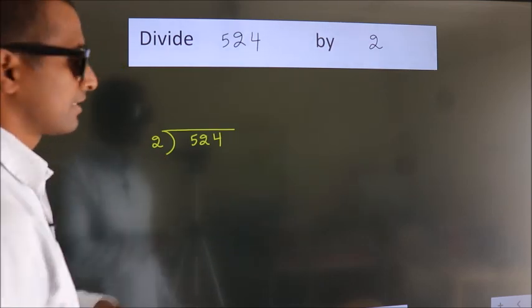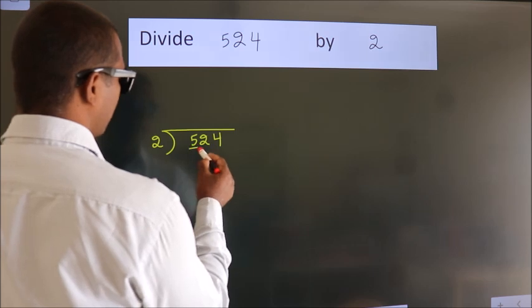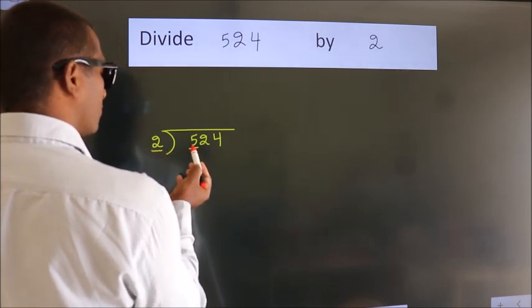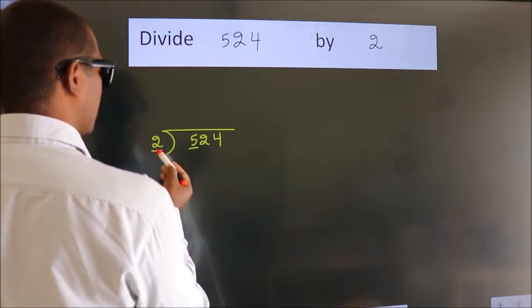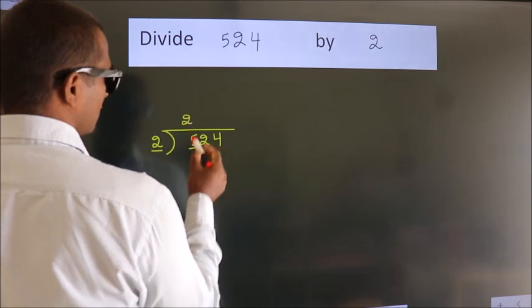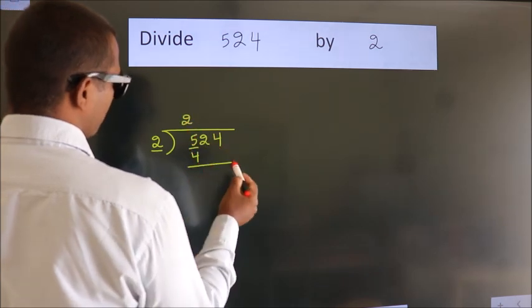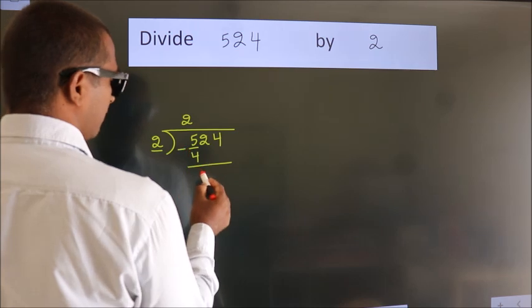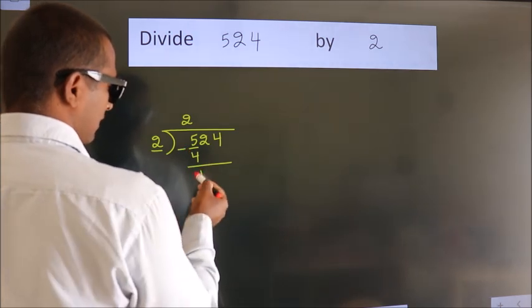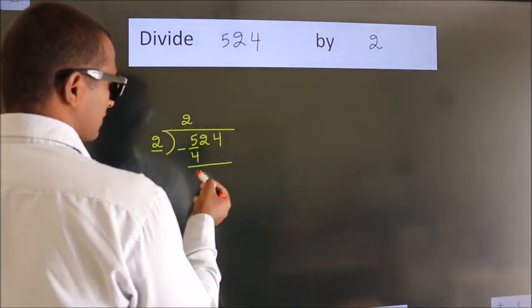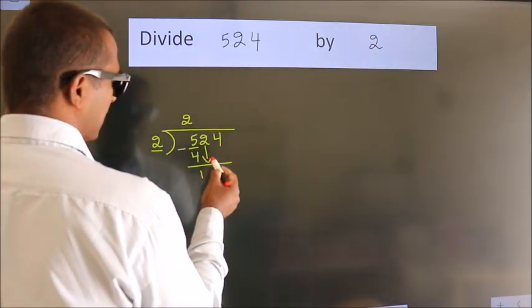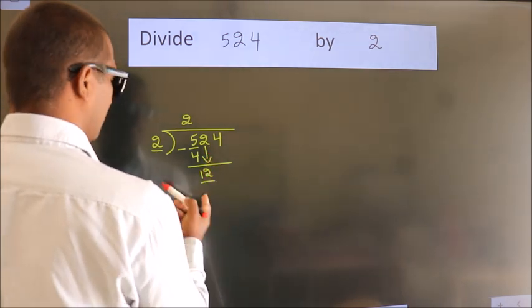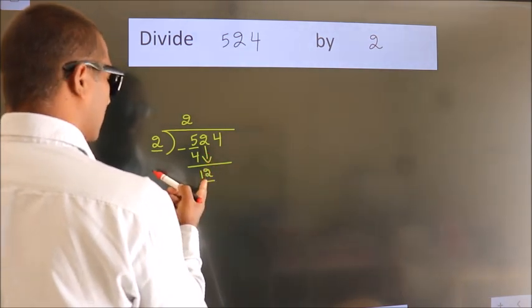Next, here we have 5, here 2. A number close to 5 in the 2 times table is 2 twos, which is 4. Now we should subtract — we get 1. After this, bring down the beside number. So 2 comes down, giving us 12.